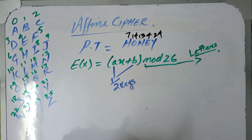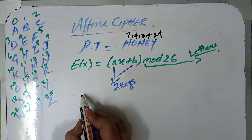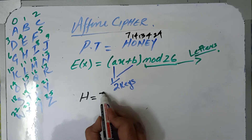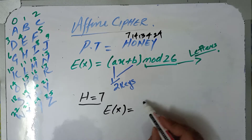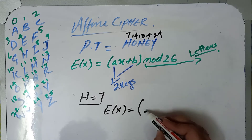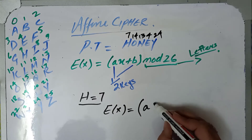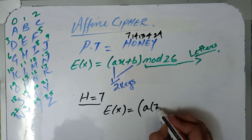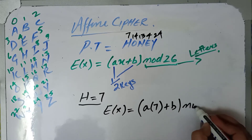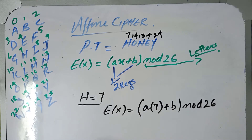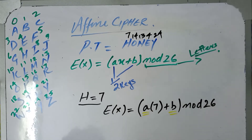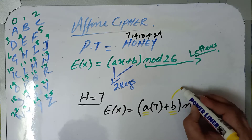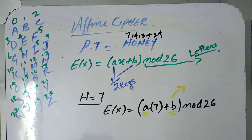Now we have to place it in our formula. First we will solve it for H, which equals 7. The formula is: a times x (which is H = 7) plus b, modulus 26. We can see that we require the values of a and b. b is something we can select between 2 and 25.